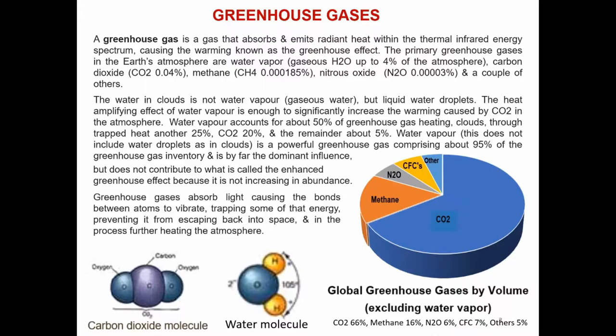The primary greenhouse gases in the Earth's atmosphere are water vapour, gaseous water, up to 4% of the atmosphere, carbon dioxide, methane, nitrous oxide and a couple of others. The water in clouds is not water vapour, gaseous water, but liquid water droplets.